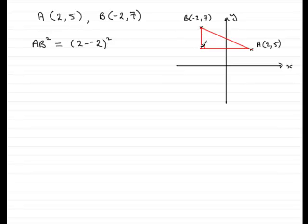This distance, the difference between the y coordinates, so that's going to be 7 minus 5, so we can have that as plus 7 minus 5 all squared. That's Pythagoras' theorem then. The sum of the squares of the two shorter sides equals the hypotenuse squared.